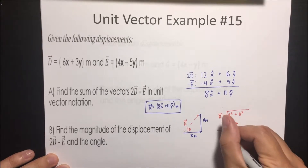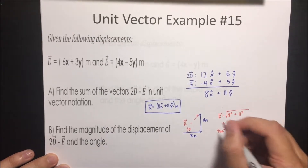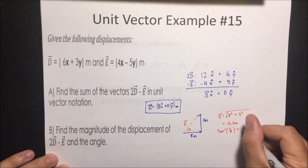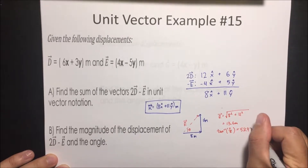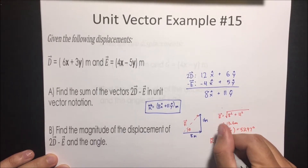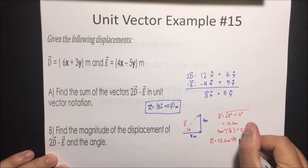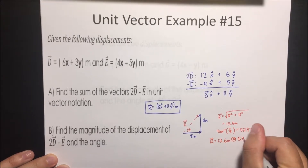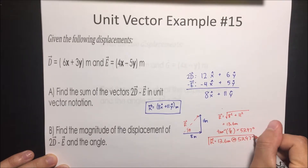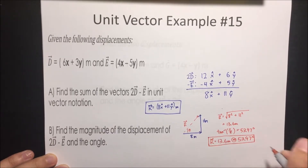Then we use arctan to find the angle: tan⁻¹(opposite/adjacent) = tan⁻¹(11/8), which gives us 53.97 degrees. So the resultant vector is equal to 13.6 meters at 53.97 degrees, or we could say 53.97 degrees north of east.